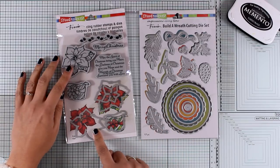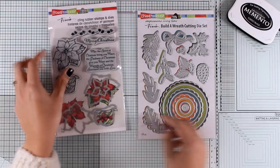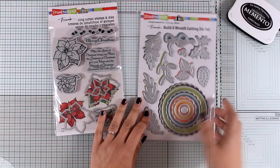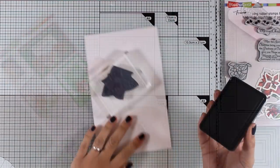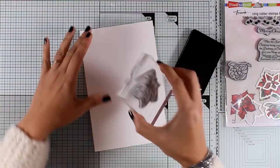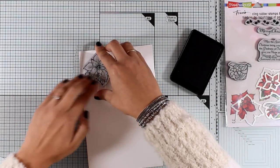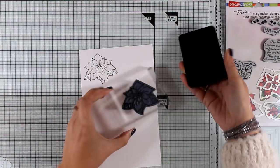So the good thing is that it comes with all the dies that you can cut out the poinsettia in different levels and you will see how that works. I'm also going to use the dies from the Build a Wreath die set. Let's start first by stamping the poinsettia. I'm going to use my alcohol-friendly black ink just because I will be using my alcohol markers to color everything.